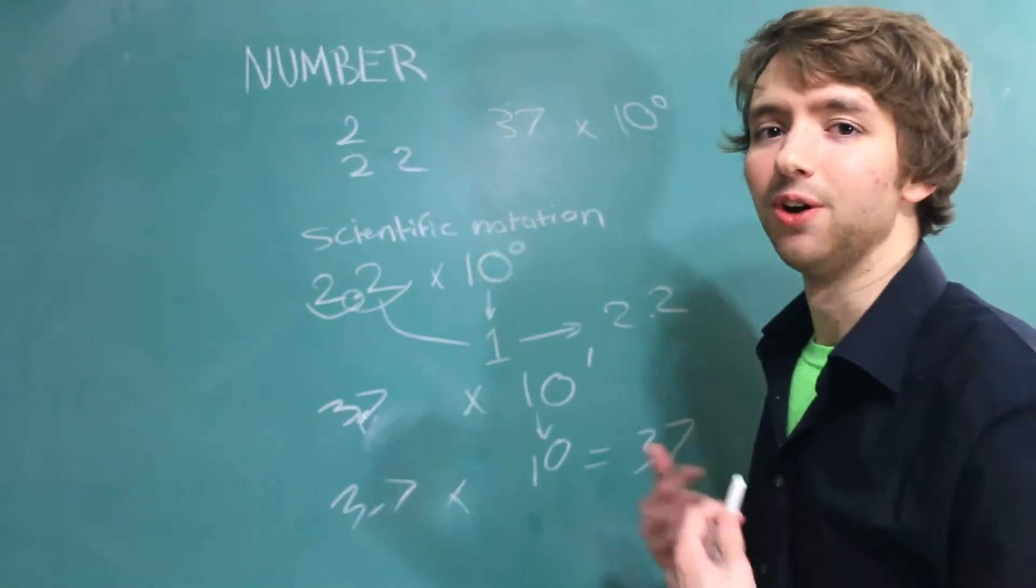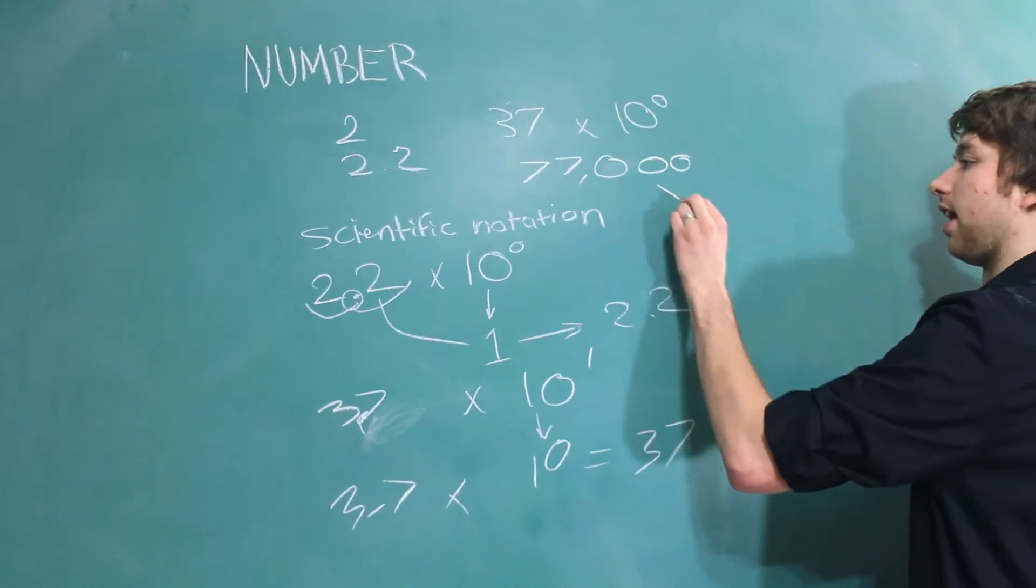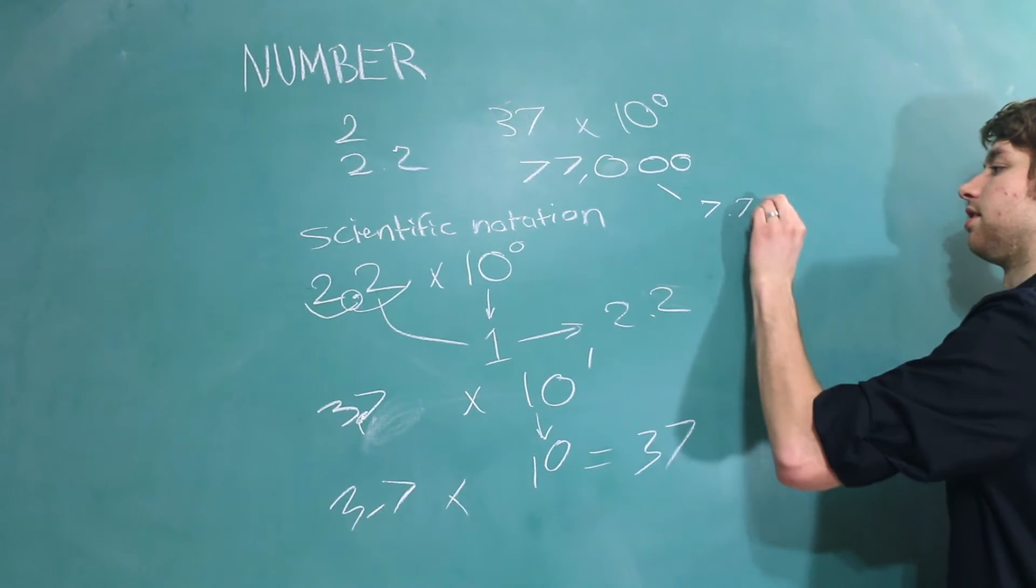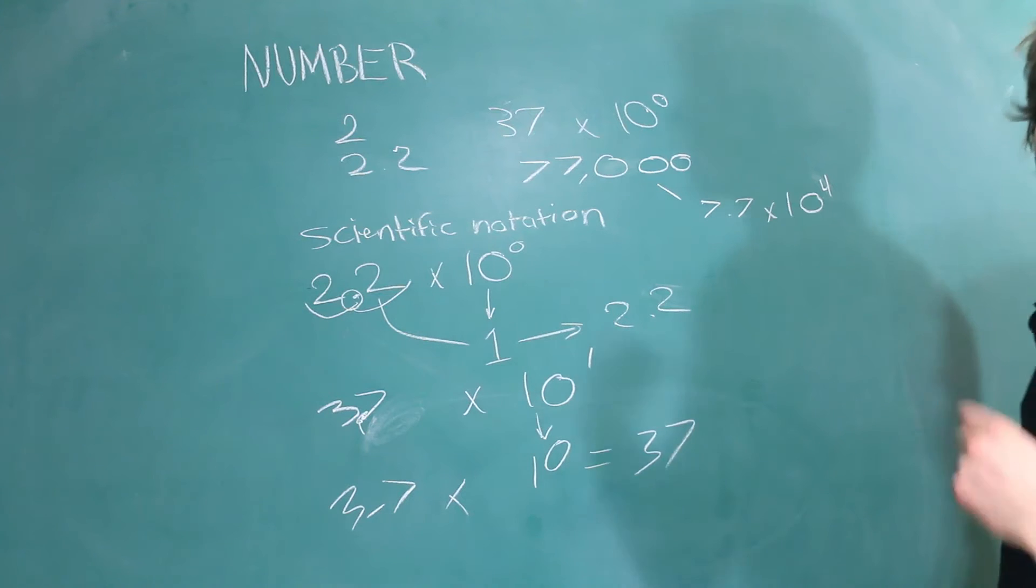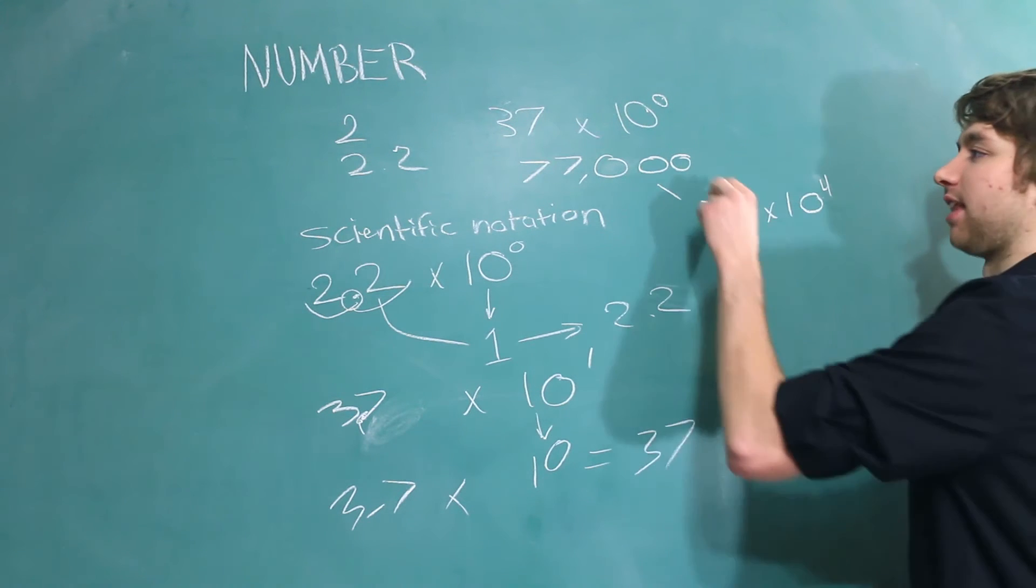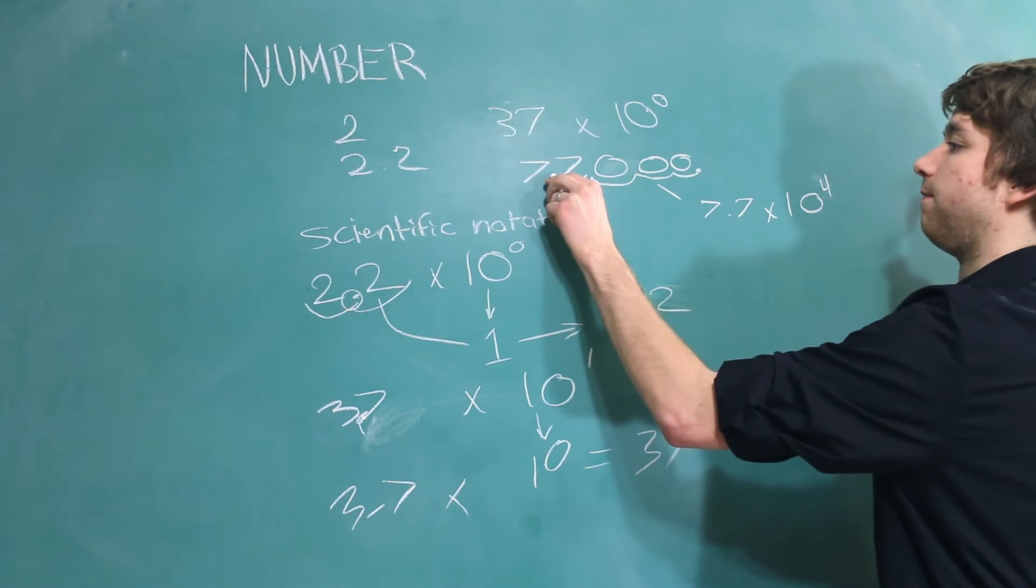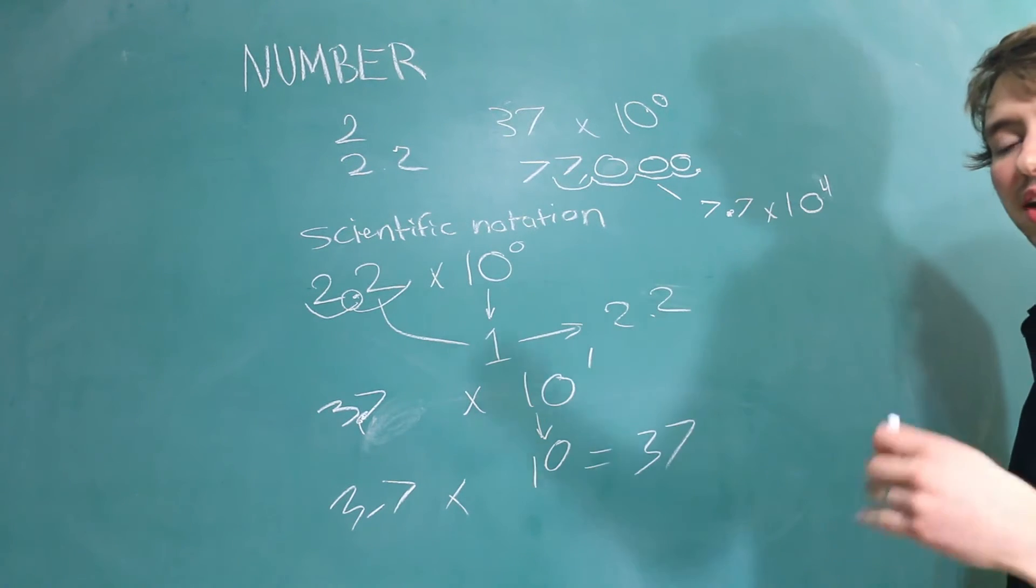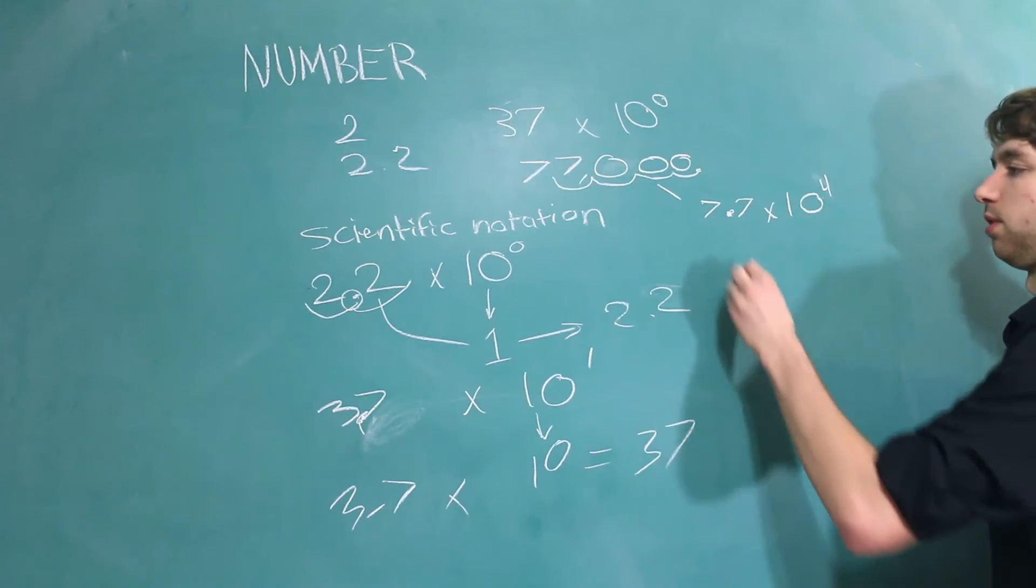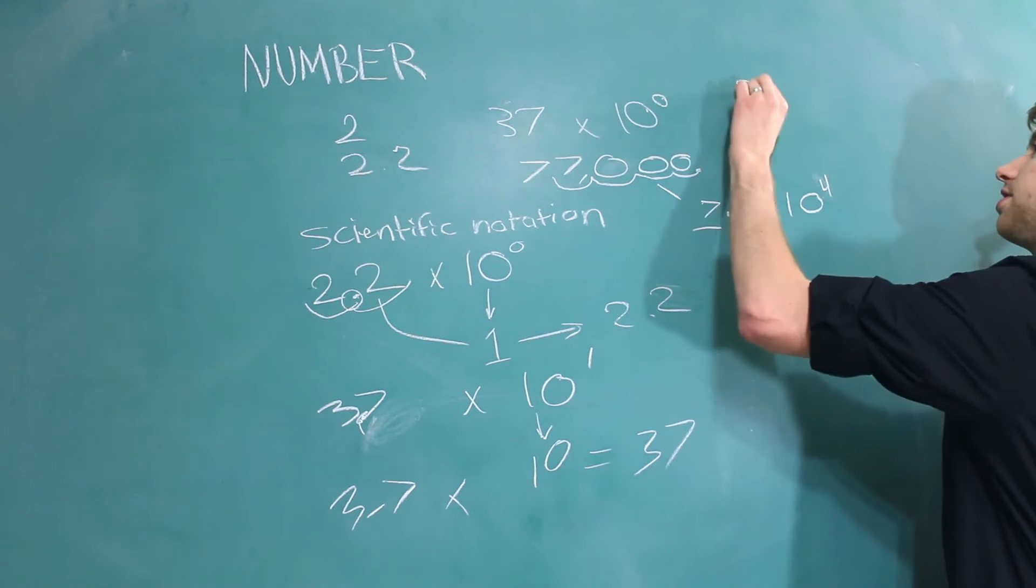We could represent this as 7.7 times 10 to the 4th. I had to think about that one pretty hard. And the way we get that is we start here with a decimal. 1, 2, 3, 4. Which leaves us right there. And you can see we really only have two digits that are important to us, 7 and 7. You could say that these digits are significant.